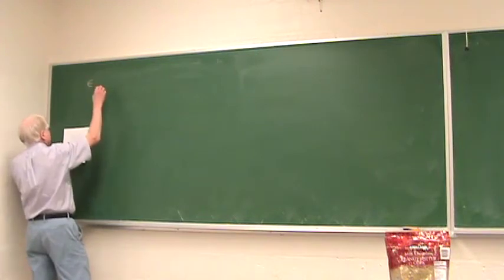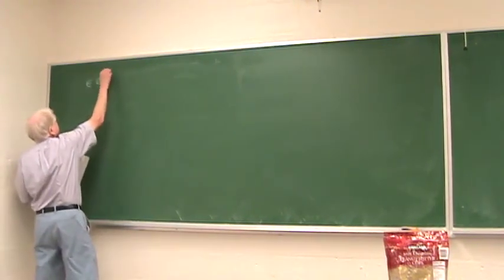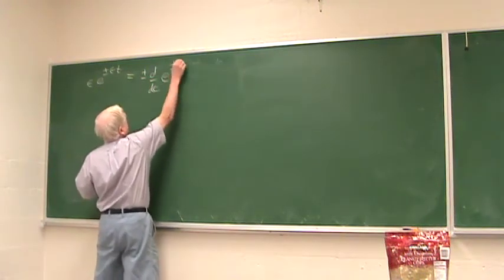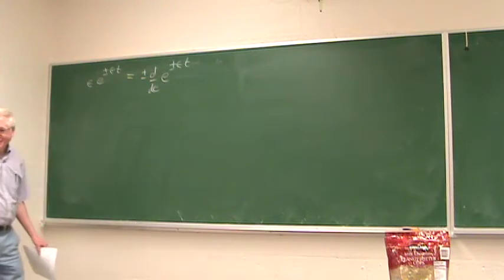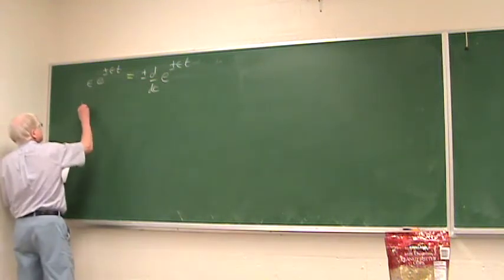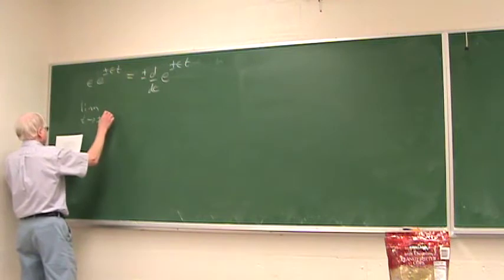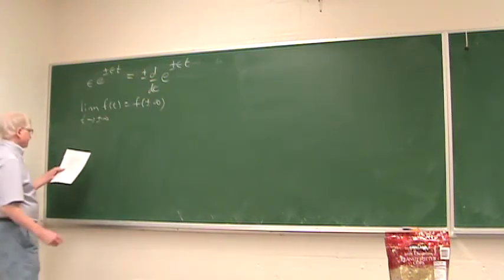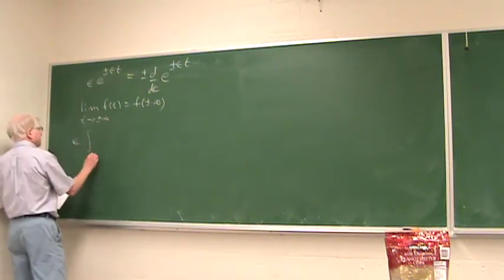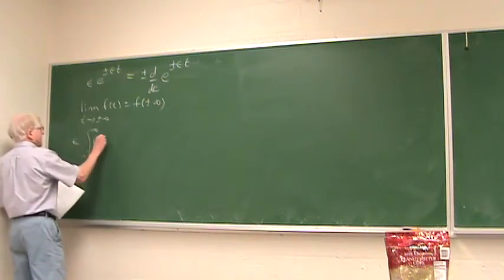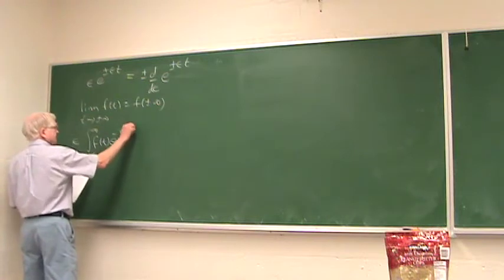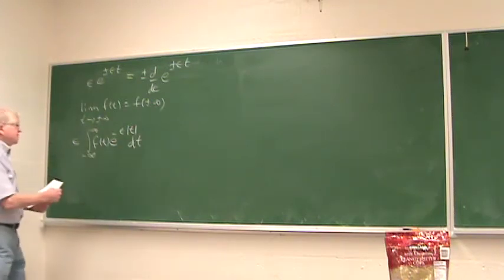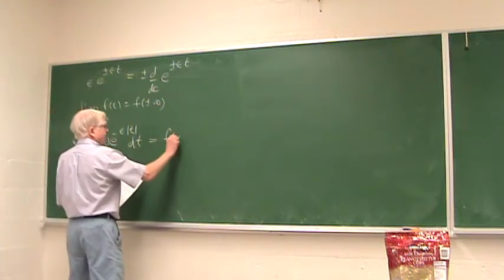We write epsilon times e to the plus or minus epsilon t as plus or minus d/d-epsilon of e to the plus or minus epsilon t, which is pretty clear. Now we assume that the limits as t goes to plus or minus infinity of f(t) exist and are finite. Then we want to look at the integral: epsilon times the integral from minus infinity to plus infinity of f(t), and show that this equals f(+∞) minus f(−∞).